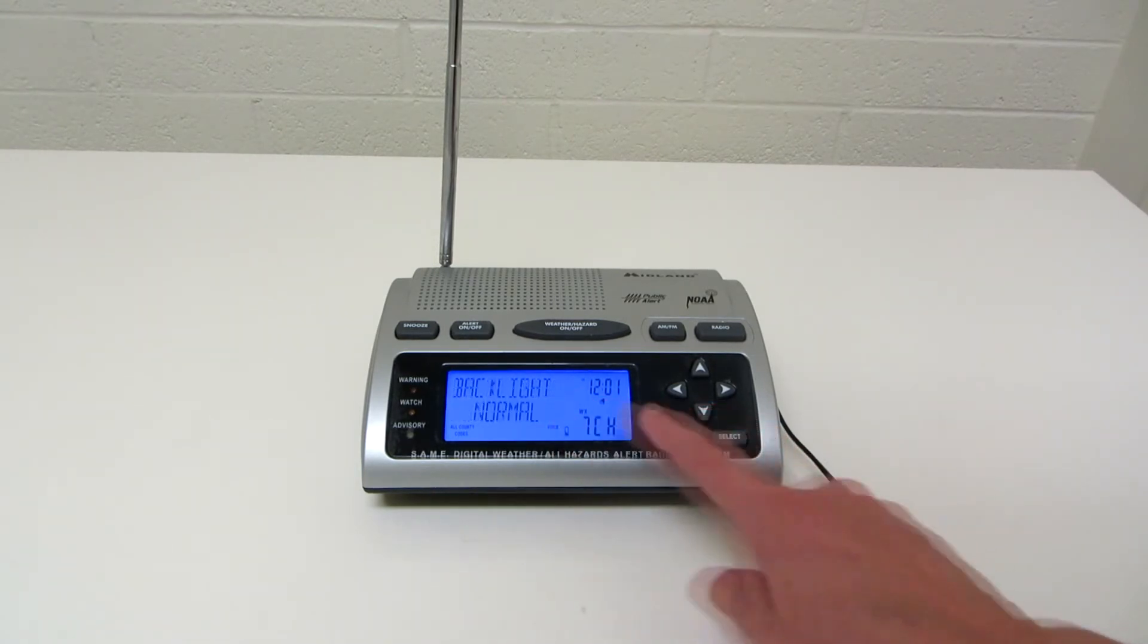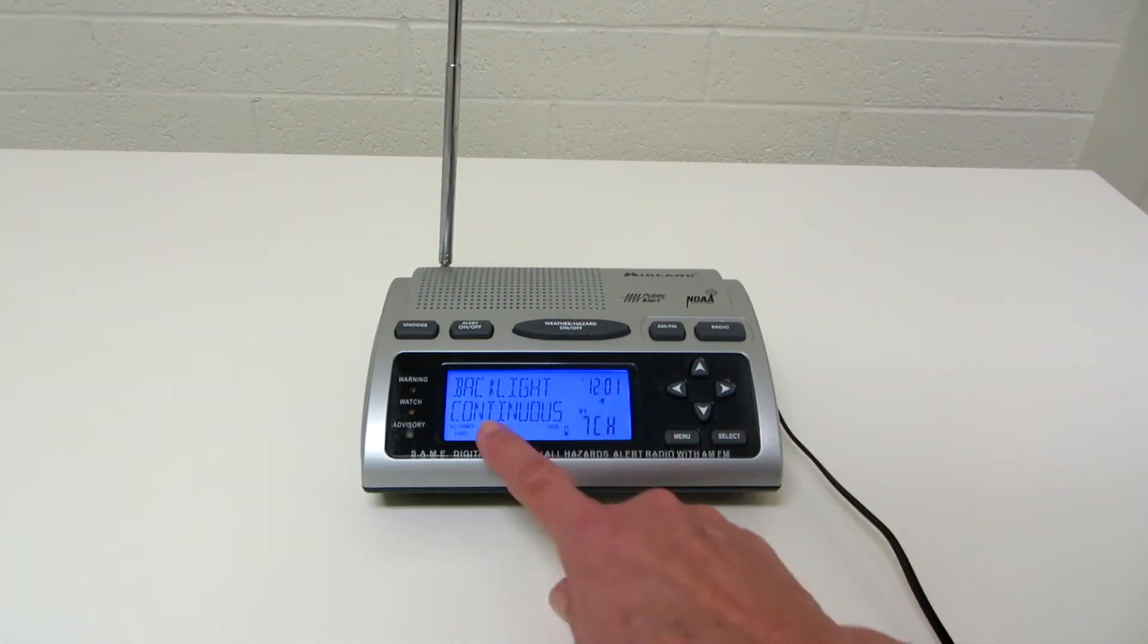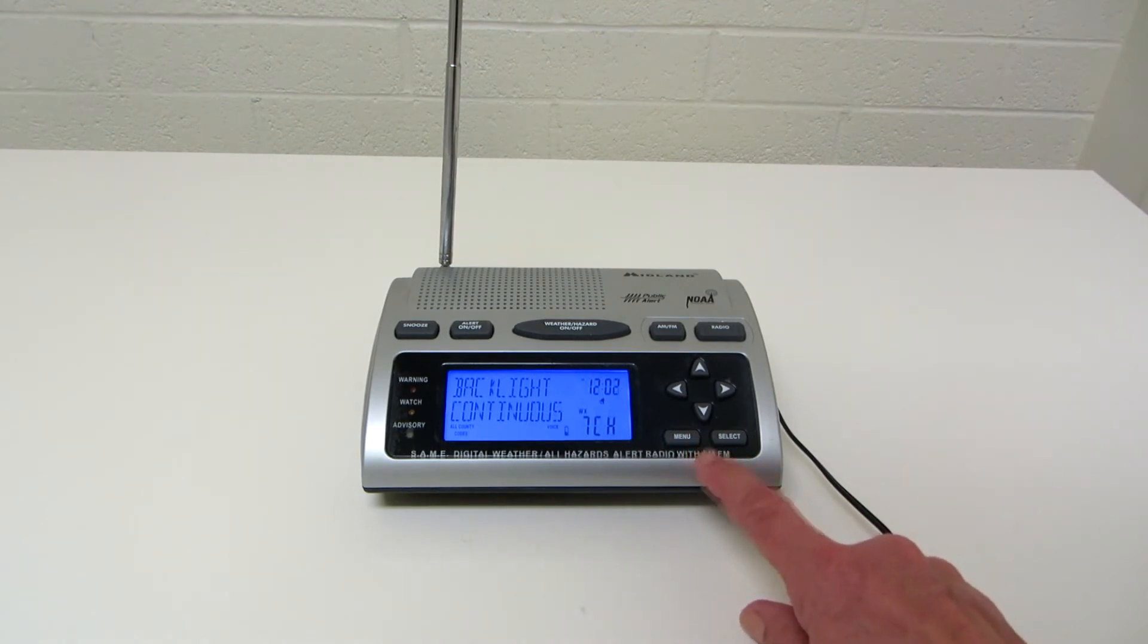Then it goes to backlight. It can be normal—you are pushing select that you want to work on that—it can be normal or continuous. I like it continuous so that the light on the screen is visible and I'll be able to know what's going on.